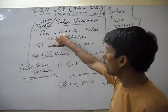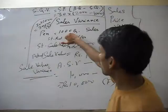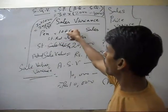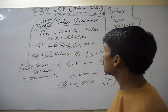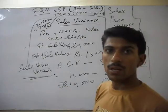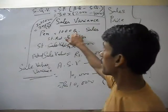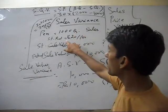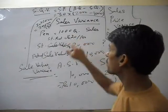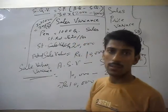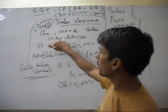If our standard quantity of pen selling is 1000 quantity and standard rate is 20 rupees per pen, this is the sale price, the standard price.